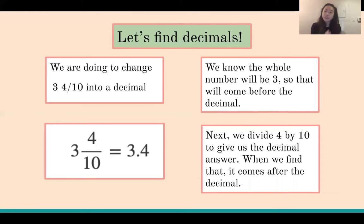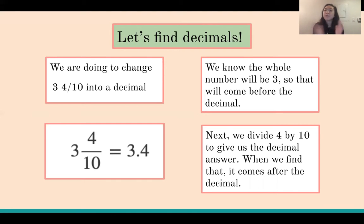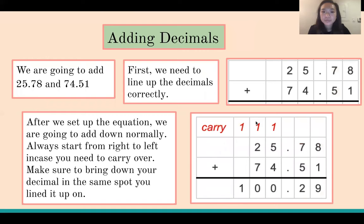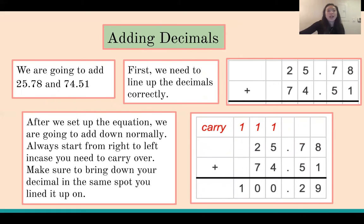As a reminder, we just divide the fraction and turn that part into the decimal. Anything before the fraction — the whole number — comes before the decimal. Now let's start adding decimals. We are going to add 25.78 and 74.51.